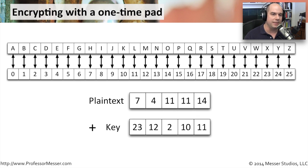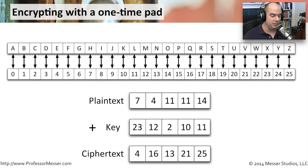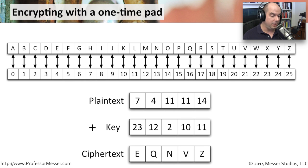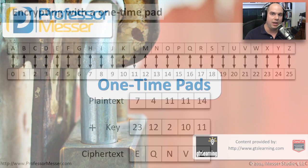Now we add the two sets of numbers together. When adding, if we go past 25, we wrap back around to 0 and start counting up again. So 7 plus 23 gives us 4 using this modular approach. Adding all the columns gives us 4, 16, 13, 21, and 25. Converting those back to letters gives us EQNVZ — that's our encrypted message. On the other end, someone with the same key takes the message, subtracts the key numbers to get the plaintext numbers, and associates them back with the letters H-E-L-L-O to get 'hello'.